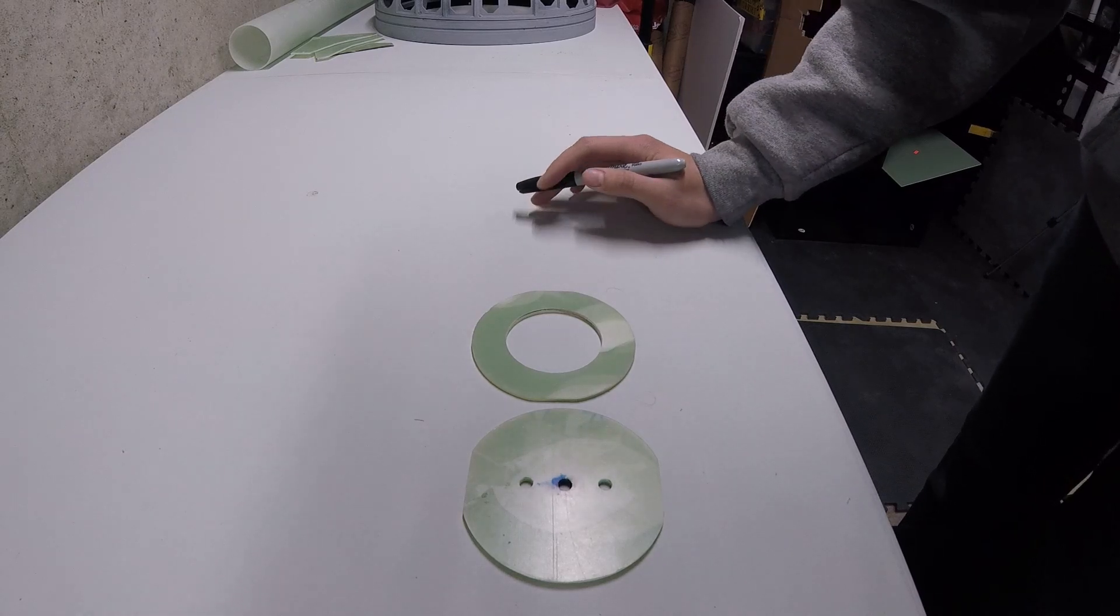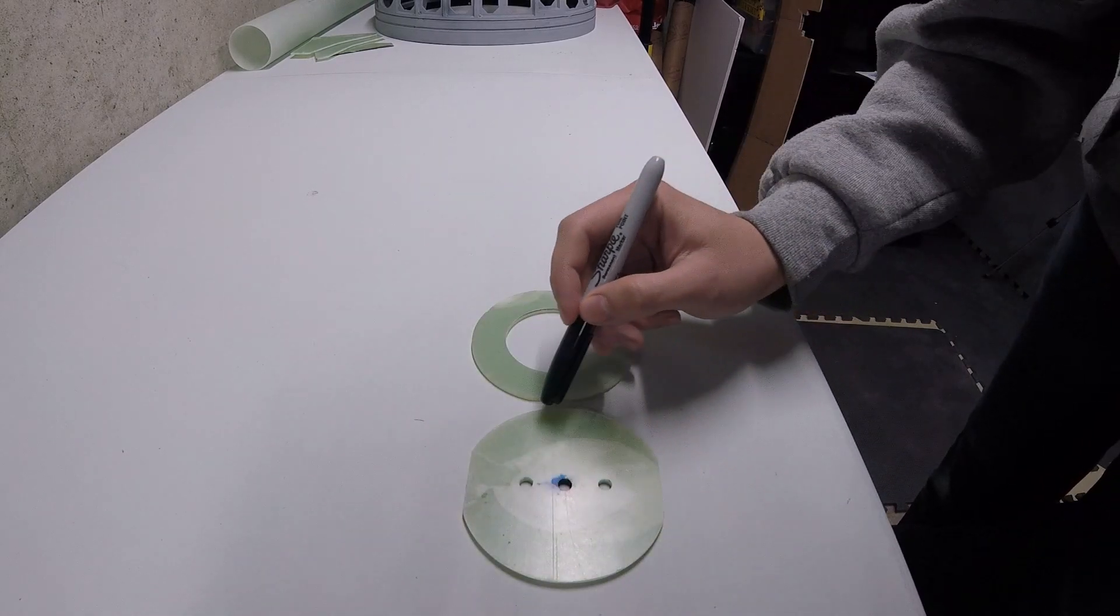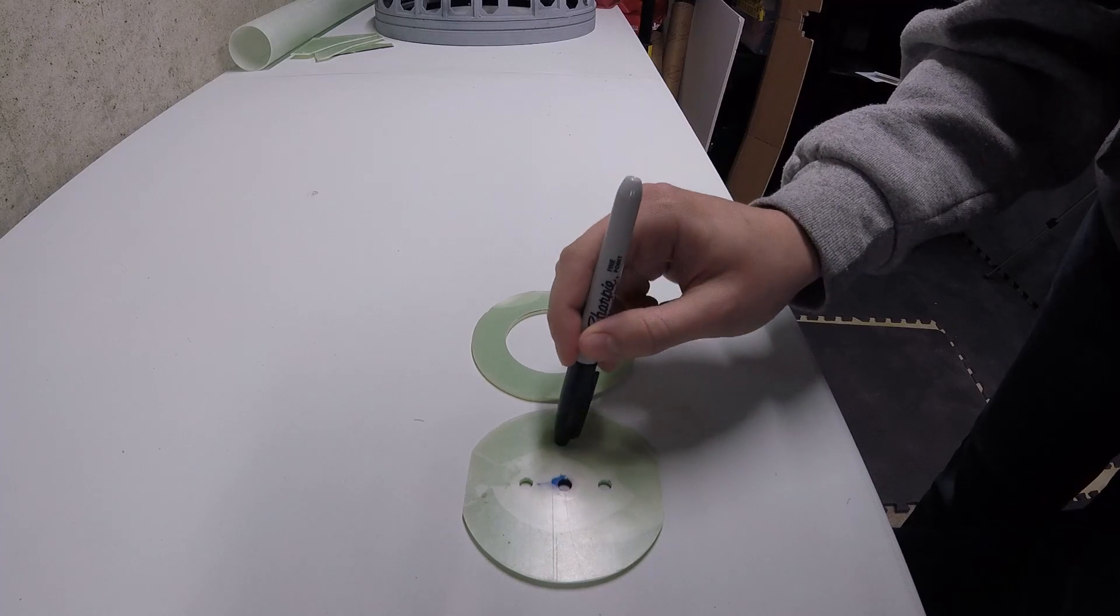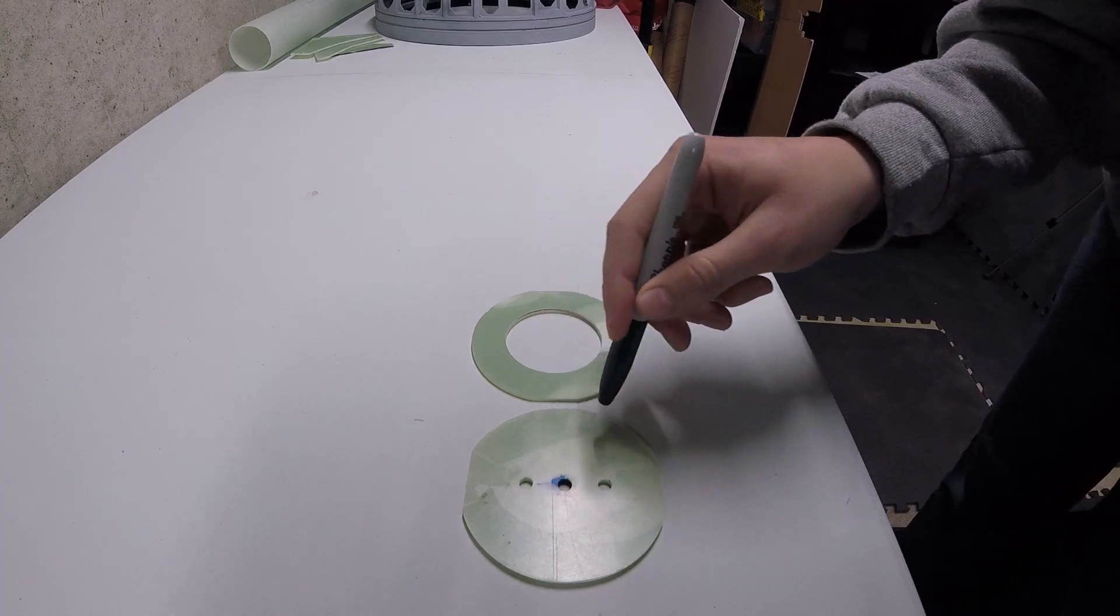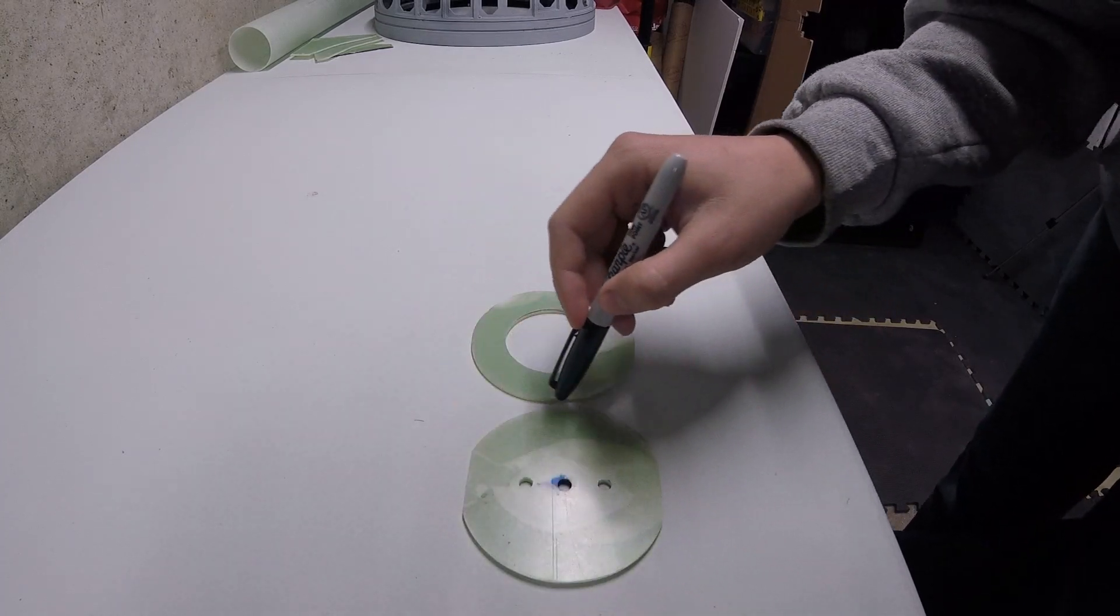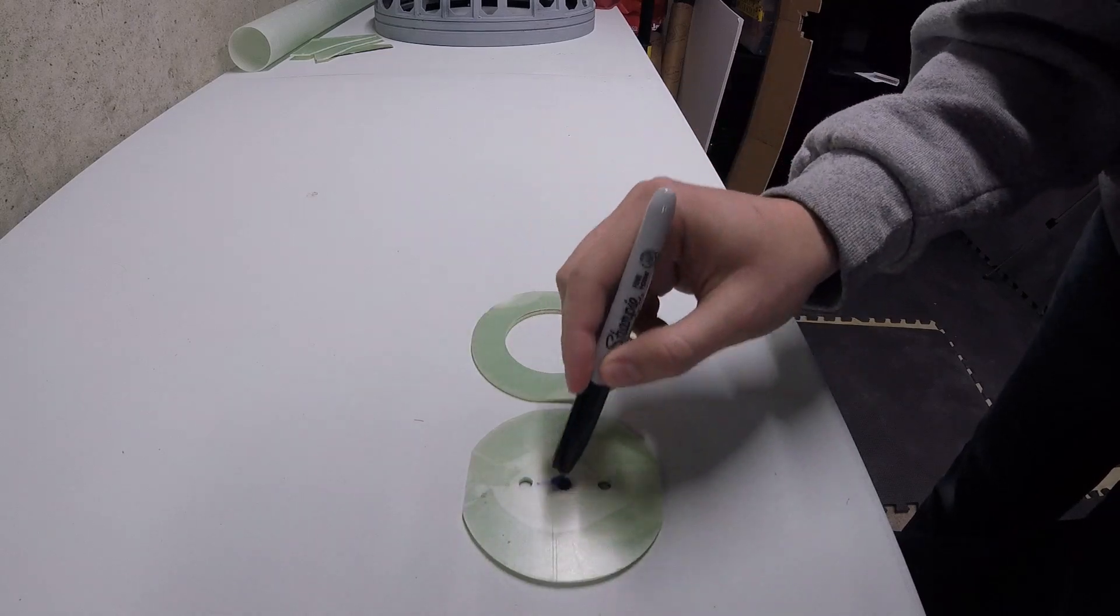So usually you end up having to draw out a three inch circle, or in this case a four inch circle, and then cut it out and sand it.